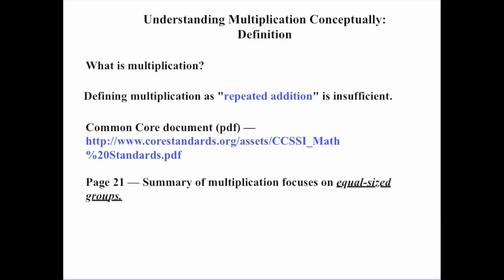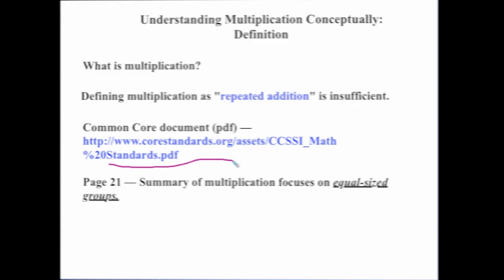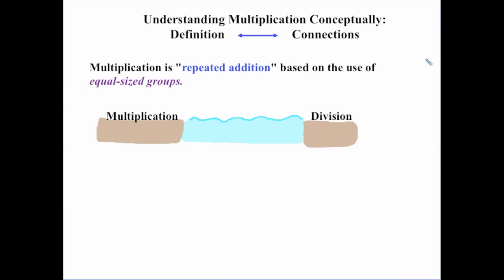If we go to the Common Core document, and we can find it at this website, on page 21, there is a summary of multiplication, and it focuses on this idea of equal-sized groups. So a much better definition of multiplication is that it is repeated addition, but it's based on the use of equal-sized groups.